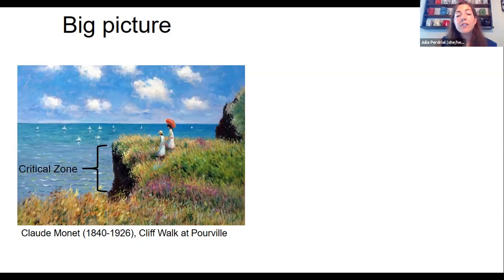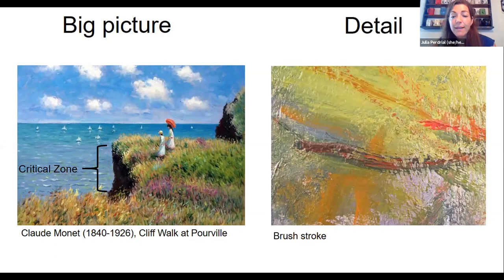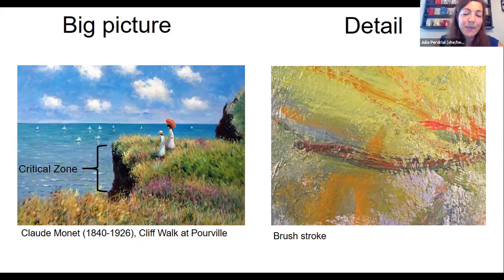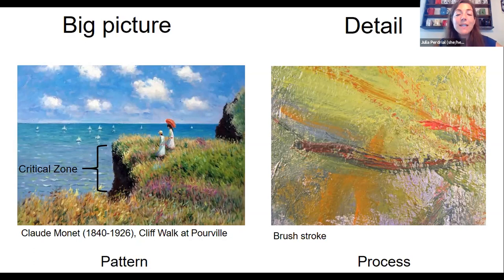But if we wanted to understand how that works, we would probably take a couple of steps closer and look at the detail, like for example the brushstroke. How exactly are they doing it? Once we understood that, it might be possible to maybe one day try to do something similar. In my mind, we see patterns often in the big picture and the process often in the detail.